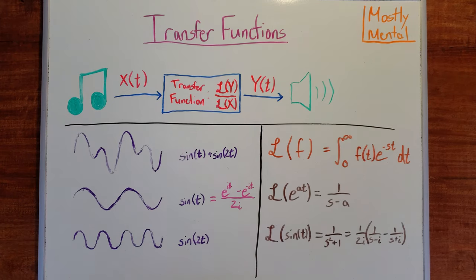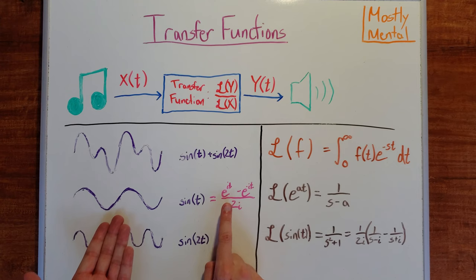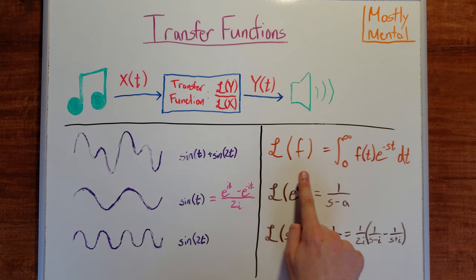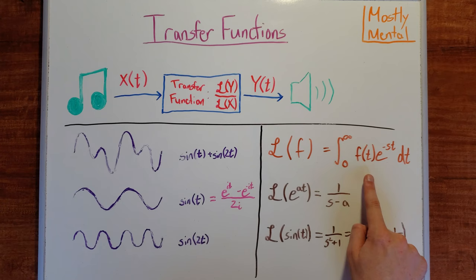Intuitively, the Laplace transform is a measure of how close every possible exponential function is to a given signal. So this sine wave should be similar to, say, e to the i t. To rigorously capture that intuition, we need a more formal definition. And we define the Laplace transform as L of f is this integral from 0 to infinity of f of t e to the negative st dt.